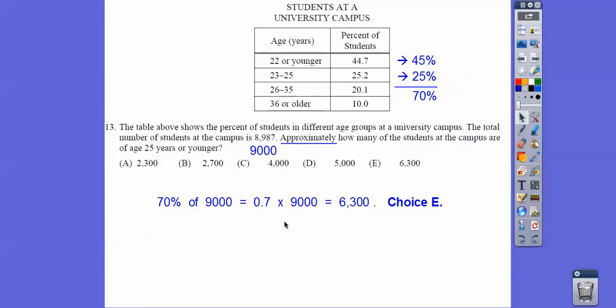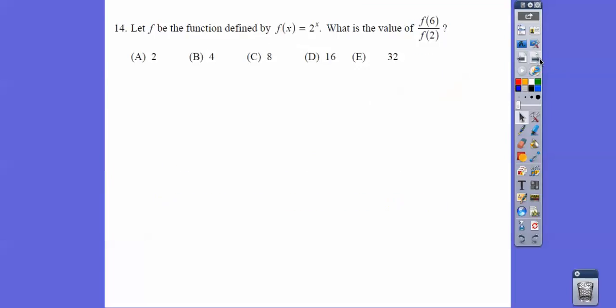So 70% of 9,000 is approximately 6,300. The word approximately, let me do that.